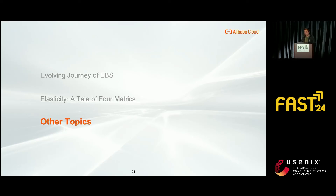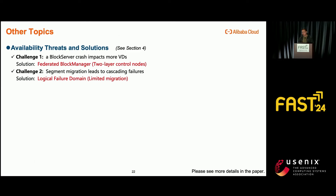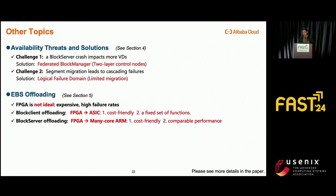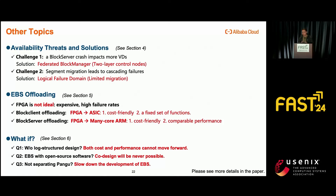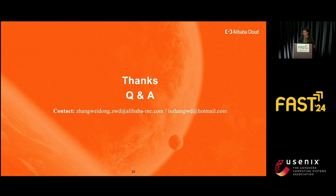Part three — other topics. Due to time constraints, today I can only share the evolution of three generations of EBS and one of the key features of cloud block store: elasticity. The remaining three parts of our paper — availability, offloading, and discussion of alternative solutions — are equally crucial for the development of EBS. We have gained significant experience in these areas as well, and all discussions are fully presented in the paper. That concludes my presentation. Thank you very much.